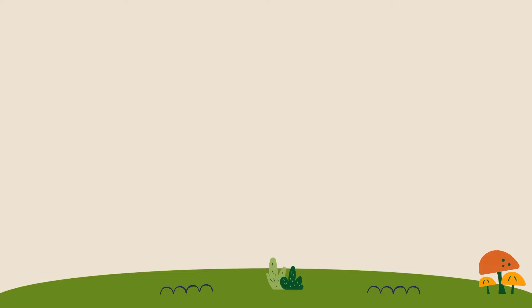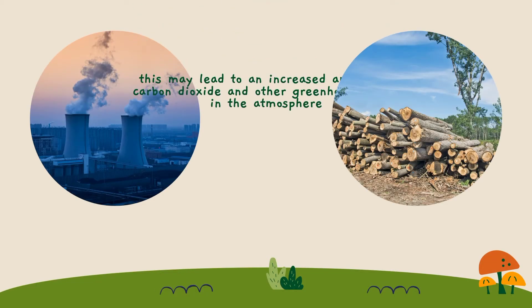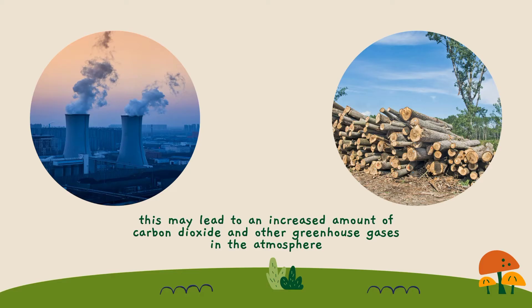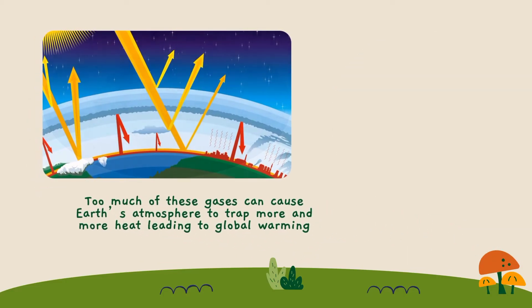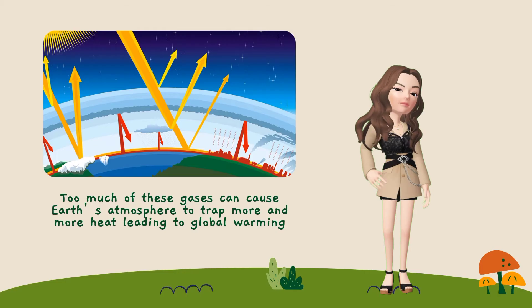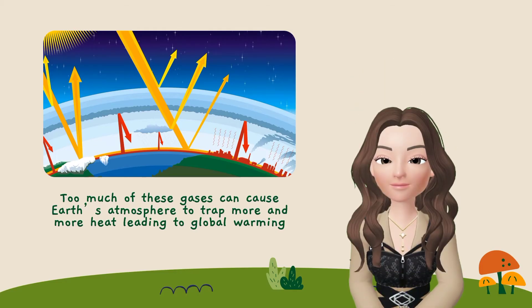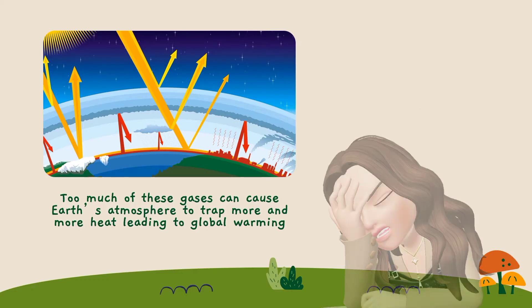For example, if humans keep on burning fossil fuels as well as cutting trees, this may lead to an increased amount of carbon dioxide and other greenhouse gases in the atmosphere. Too much of these gases can cause Earth's atmosphere to trap more and more heat, leading to global warming. It is one of the reasons why some animals and plants die, because they cannot adapt to too much heat.